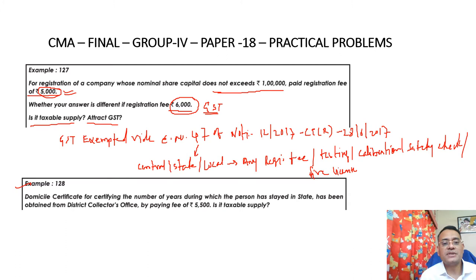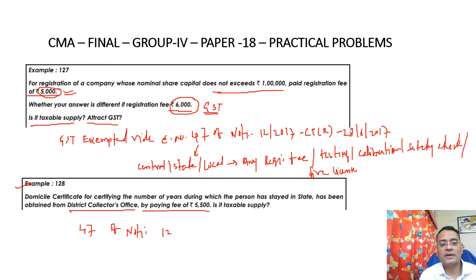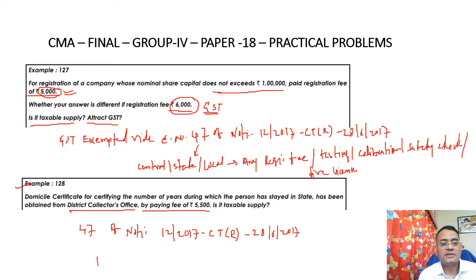Next problem: A domicile certificate for certifying the number of years a person has stayed in a state was obtained from the District Collector's office by paying a fee of Rs. 5,500. This will also be covered under Entry No. 47 of Notification 12 of 2017, Central Tax Rate dated 28 June 2017, which provides exemption for all such government services. So GST will not apply.